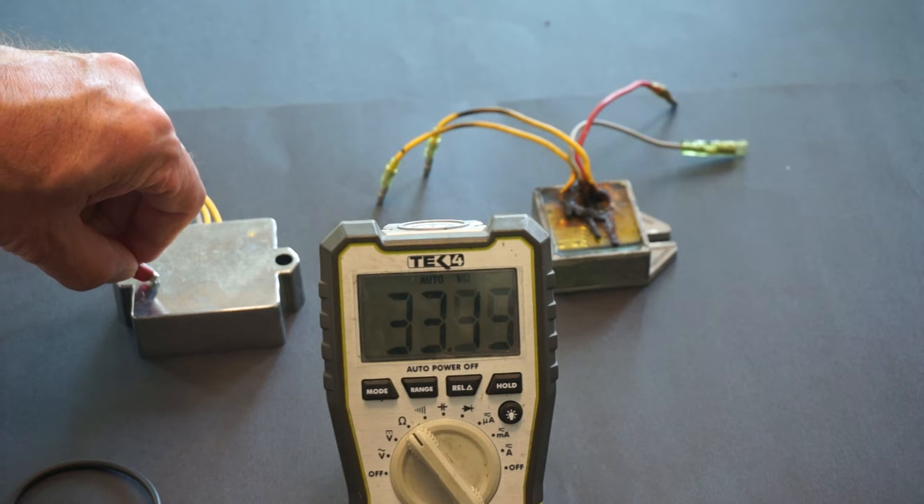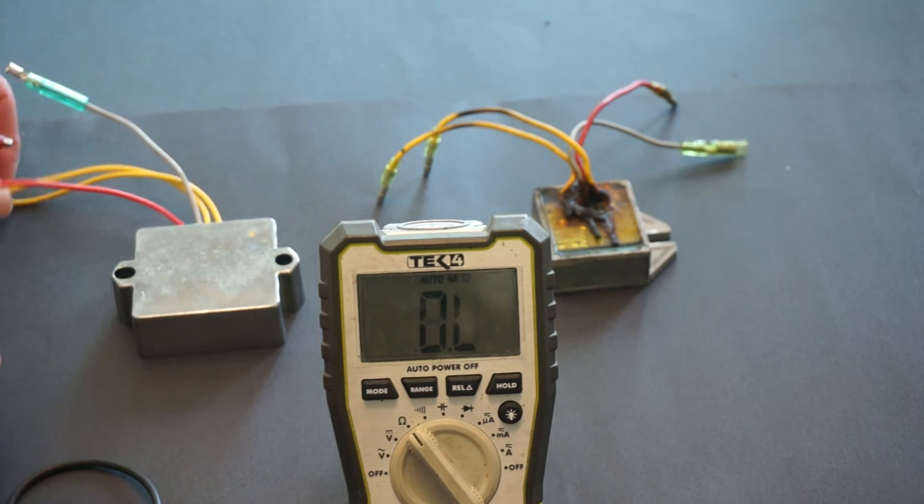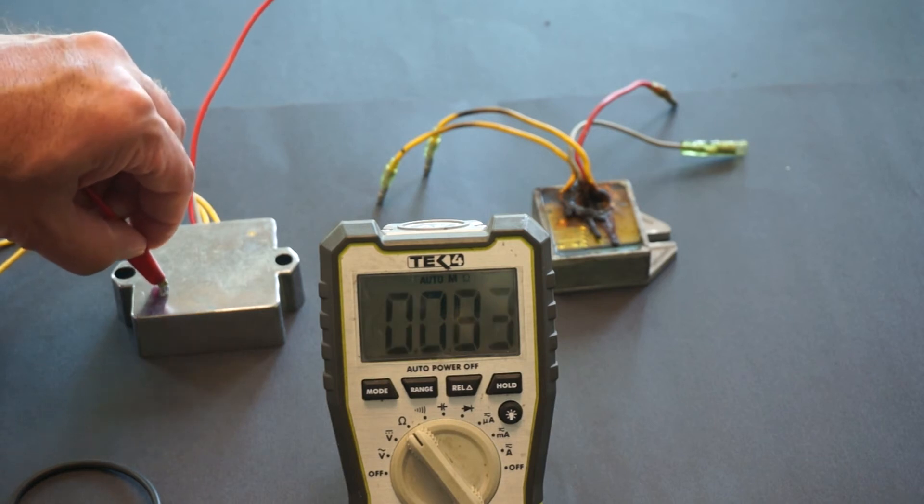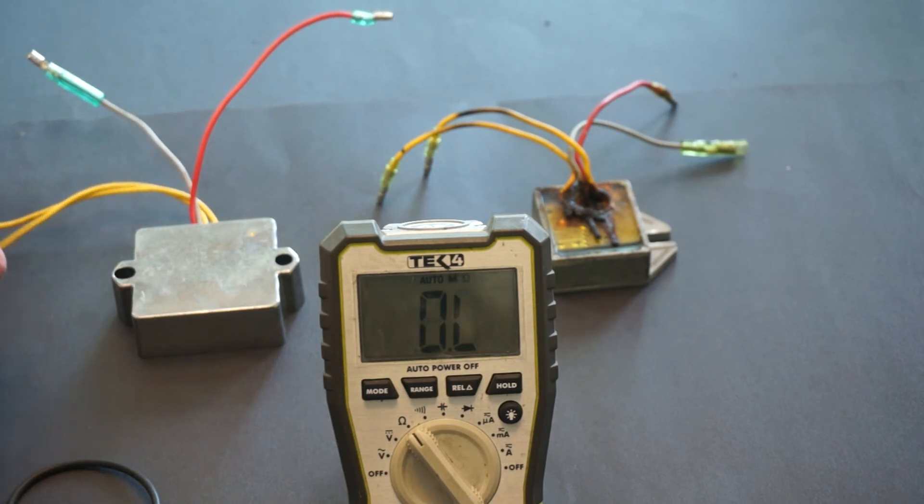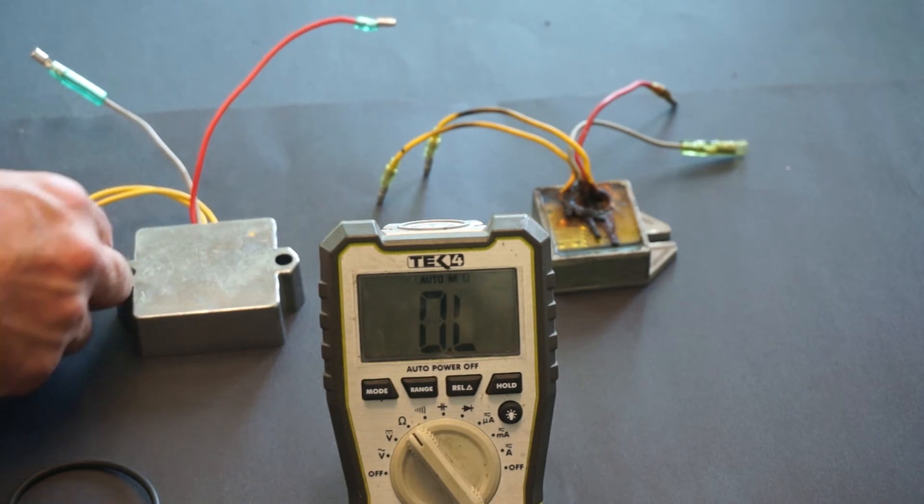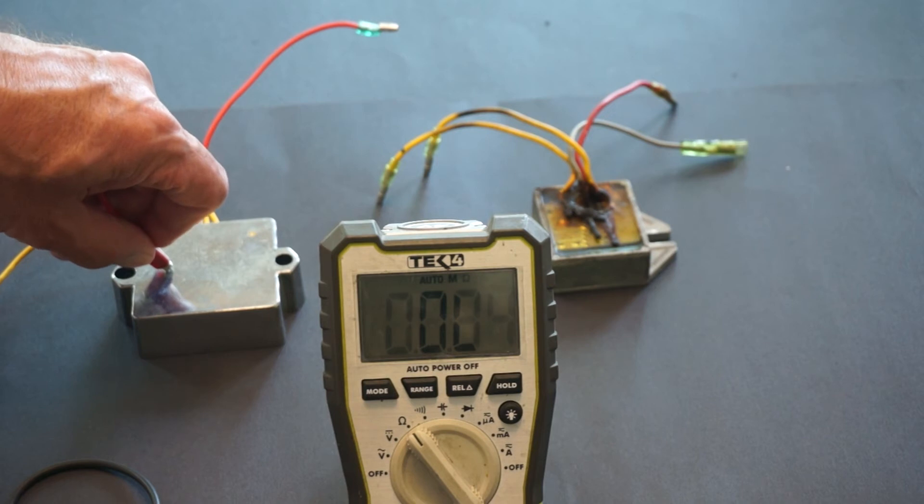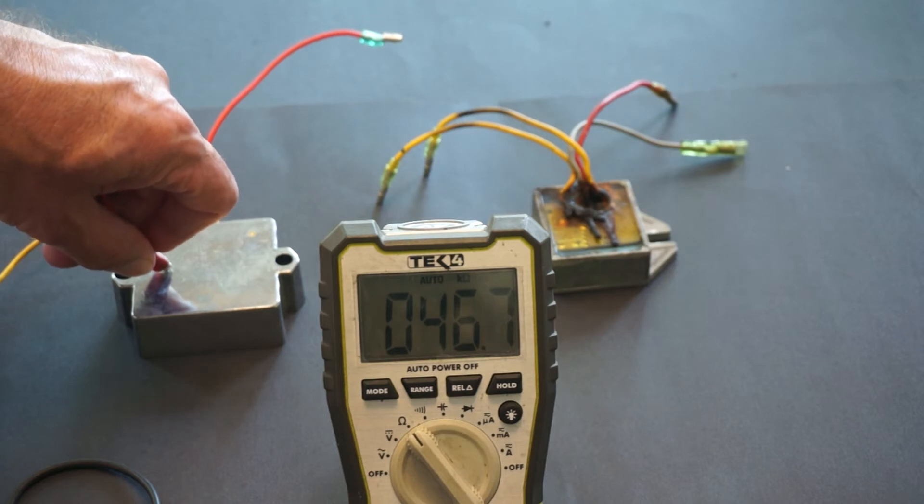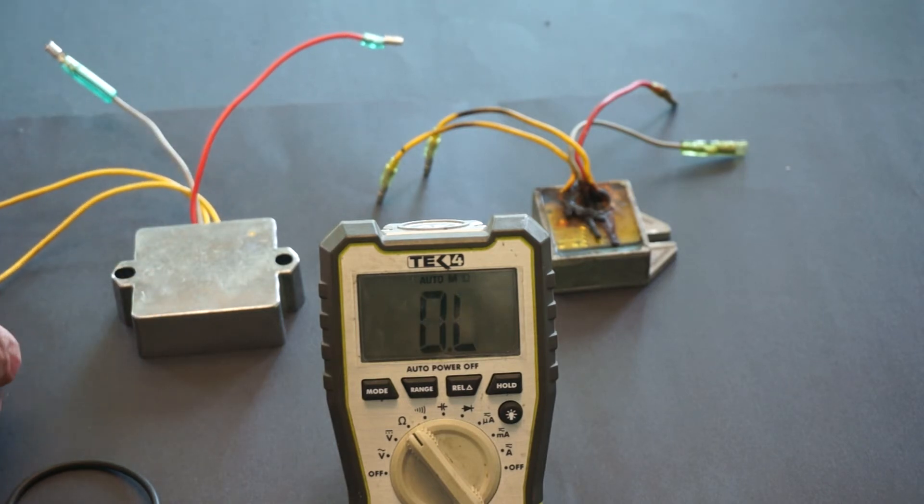Some 33 kilo ohms and let's see on the yellow ones. Some 46 kilo ohms on the one, should be the same on the second one, 46-47 kilo ohms on the second one. This is a good rectifier.